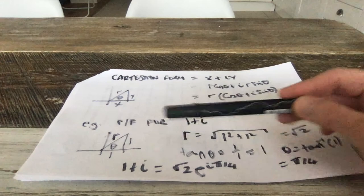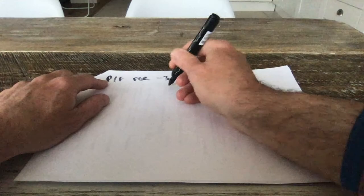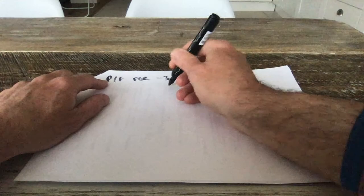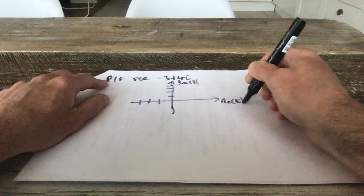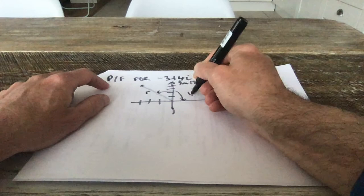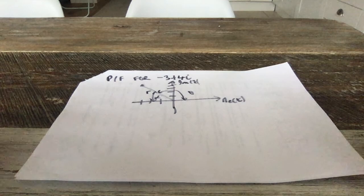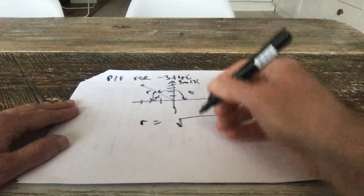Let's look at the polar form of −3 + 4i. Always draw an Argand diagram first. The point is 3 along the negative real axis and 4 up the imaginary axis. R is the modulus: √((−3)² + 4²) = √(9 + 16) = √25 = 5. There's no problem calculating the modulus — it's always the square root of the real part squared plus the imaginary part squared.